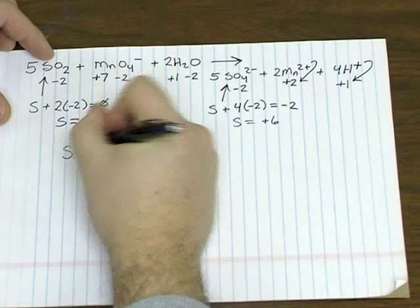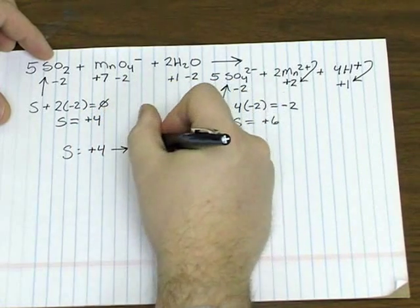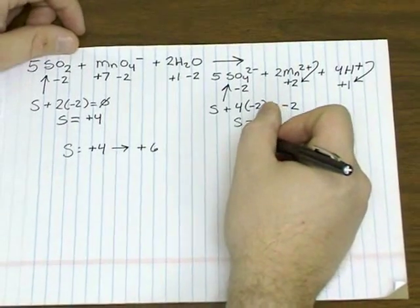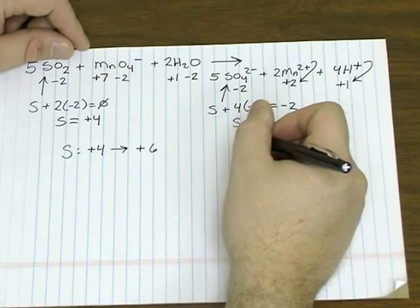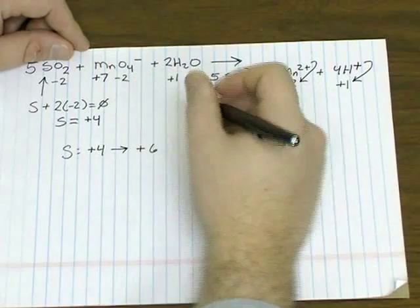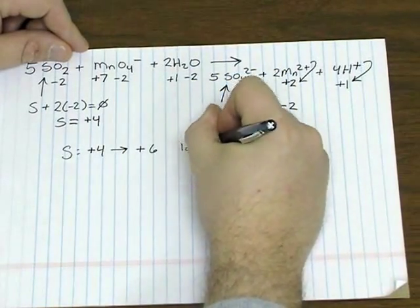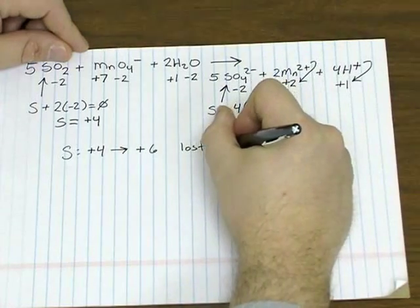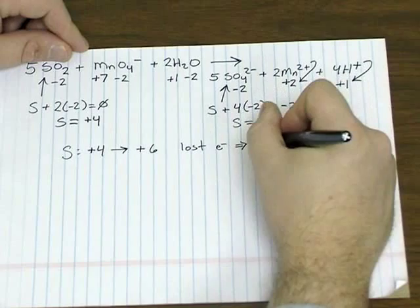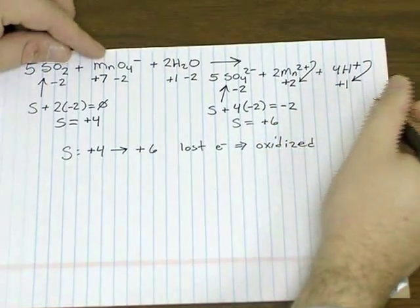So if you look at sulfur, sulfur is going from a plus four oxidation number to a plus six oxidation number. So again, we treat these oxidation numbers like real charges. To go from a plus four to a plus six charge, that requires you to remove or lose electrons, which means sulfur has been oxidized.